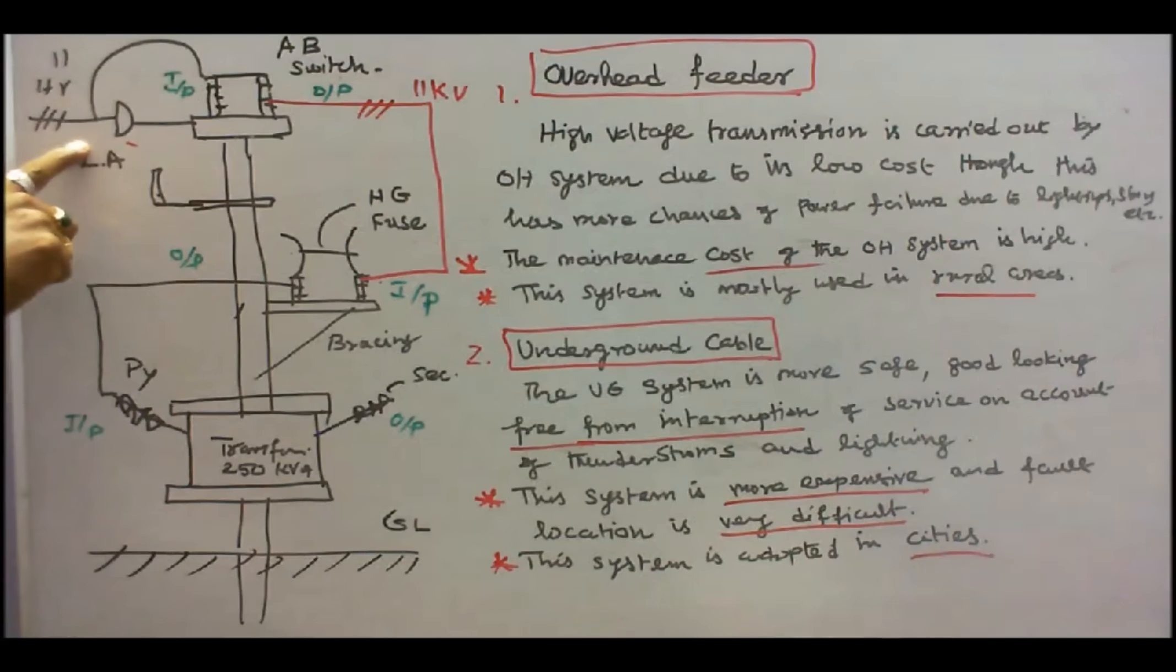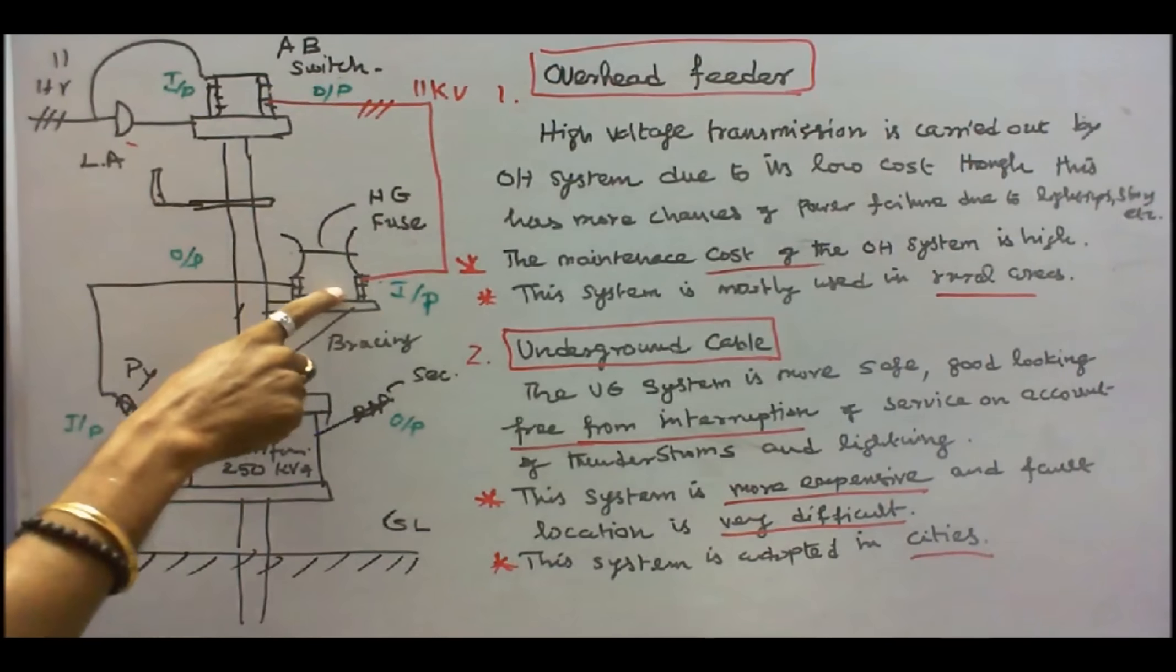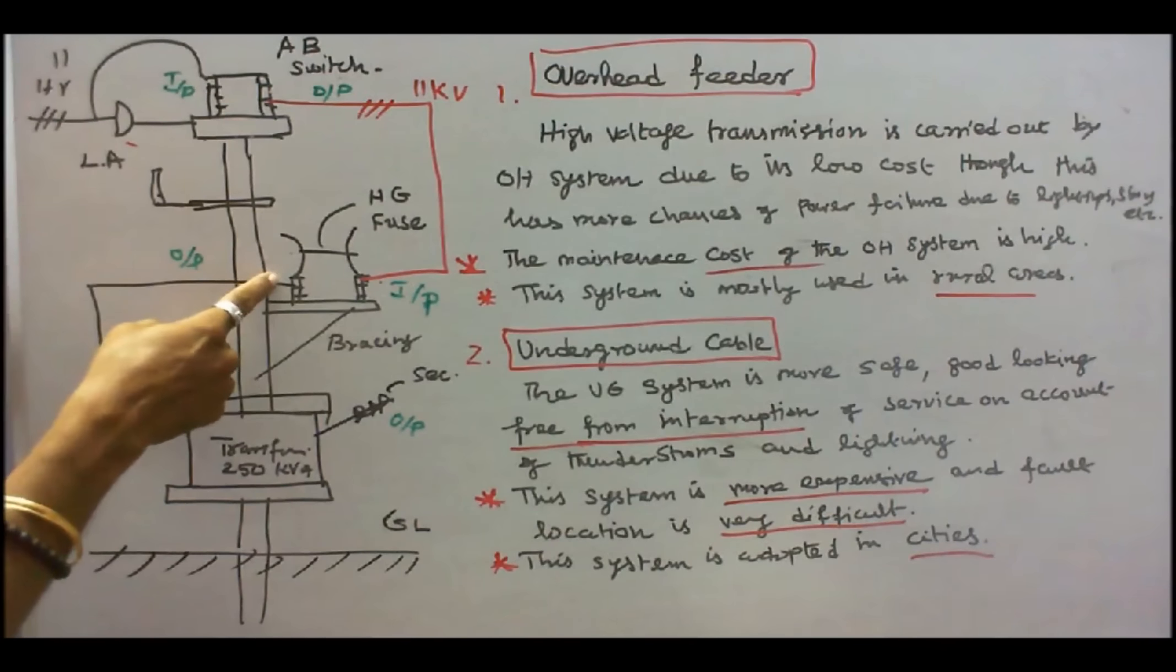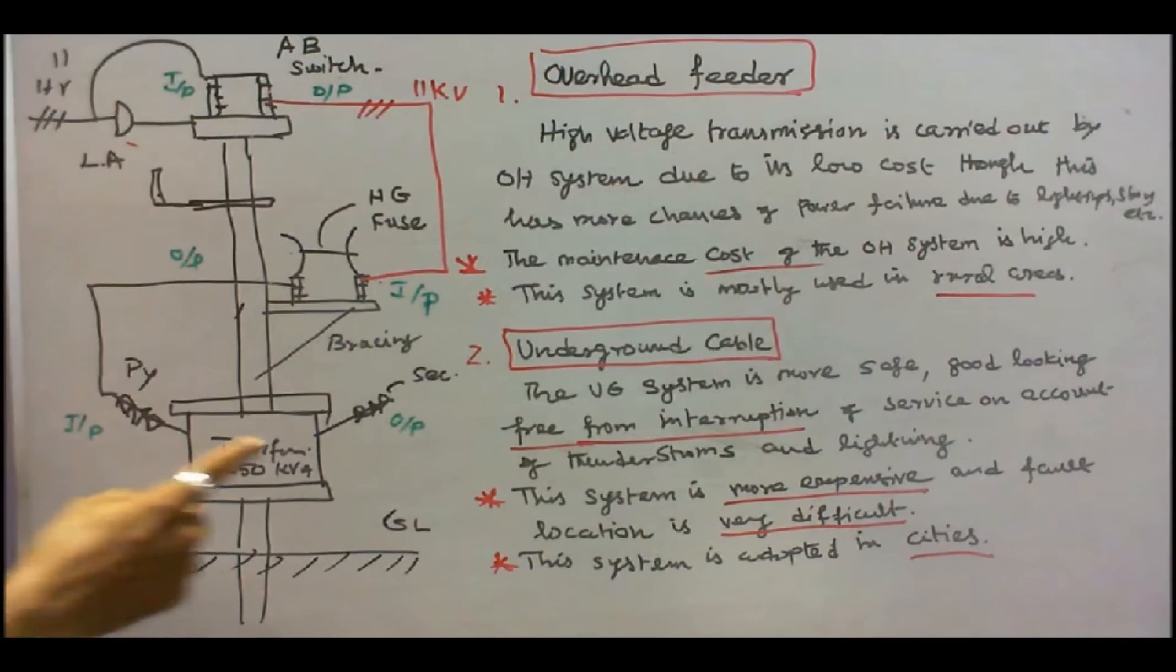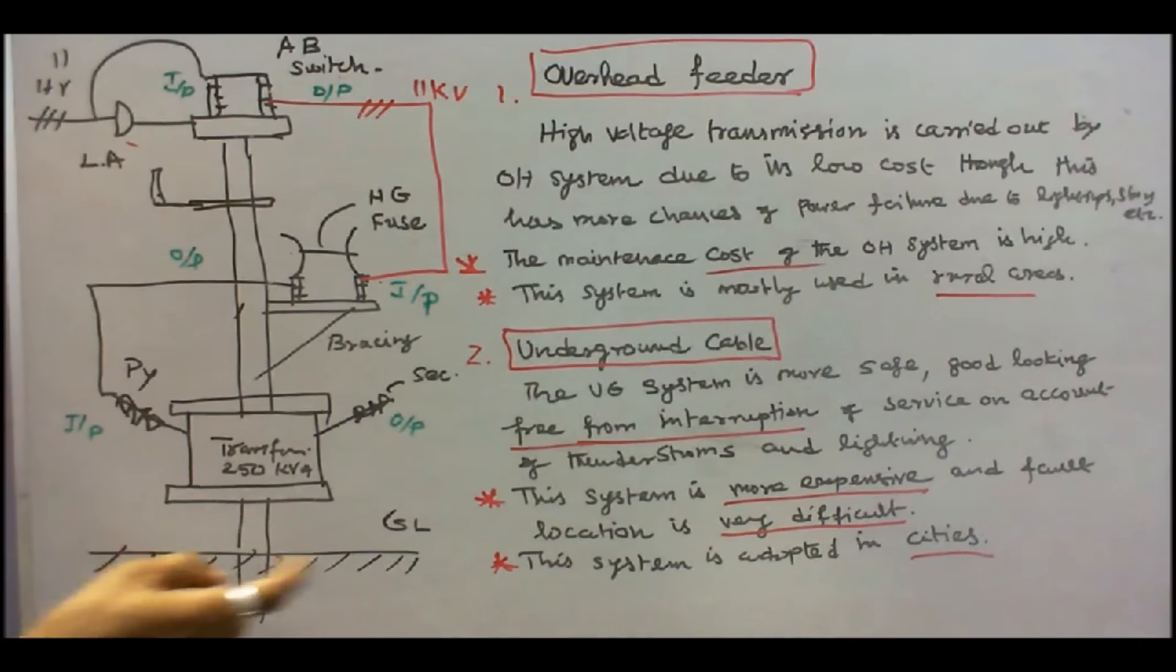Here, the 11KV line is incoming. This is the disk insulator. This is set to the input of the air brake switch. The output of the air brake switch is put into the horn gap fuse unit input. The output of the horn gap HG fuse unit comes to the primary winding of the transformer. The secondary winding goes to the control board. Now, we will see the control board.